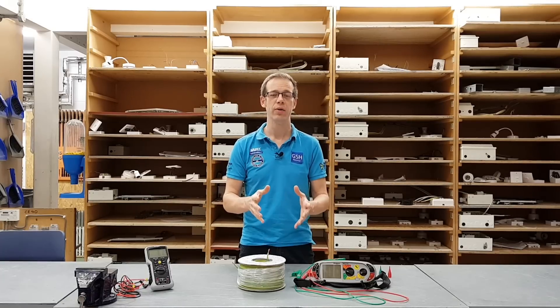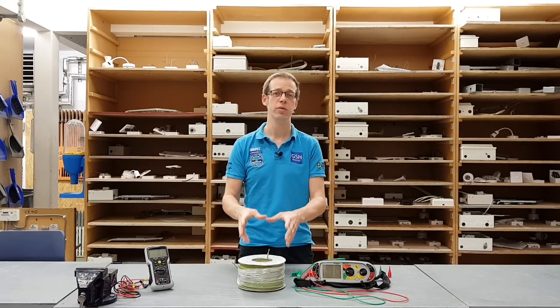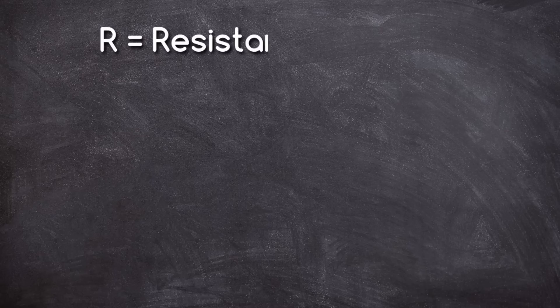So we'll do some calculations, make sure that we've got our SI units right, and then we'll measure the resistance of the drum of cable and see if our calculation is correct. There are a few things we need to think about before we start doing this calculation. We're going to need to know four things. First of all we start off with resistance — the mathematical symbol for resistance is R, a capital R, and resistance is measured in ohms with the unit symbol omega.